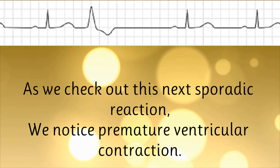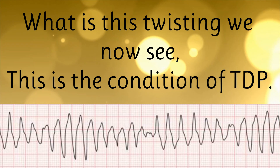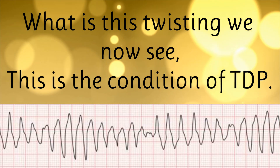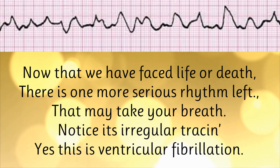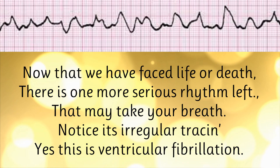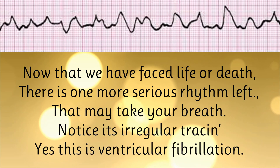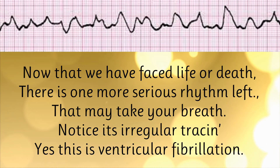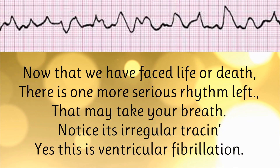As we check out this next sporadic reaction, we notice premature ventricular contraction. What is this twisting we now see? This is the condition of TDP. Now that we have faced life or death, there is one more serious rhythm left that may take your breath. Notice its irregular tracing — yes, this is ventricular fibrillation.